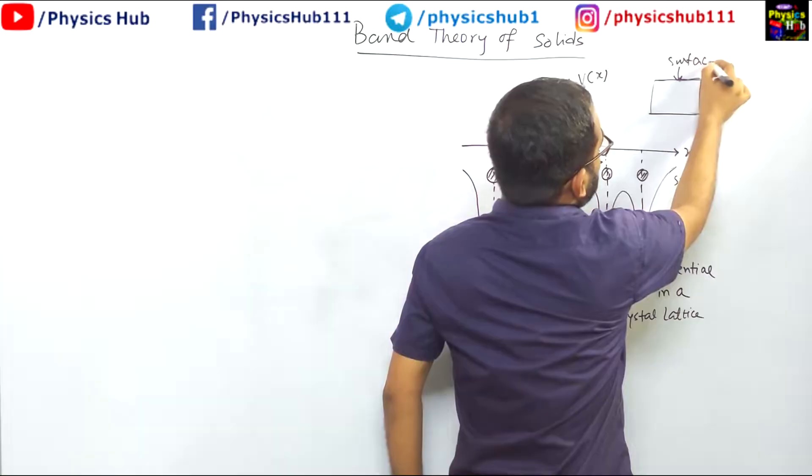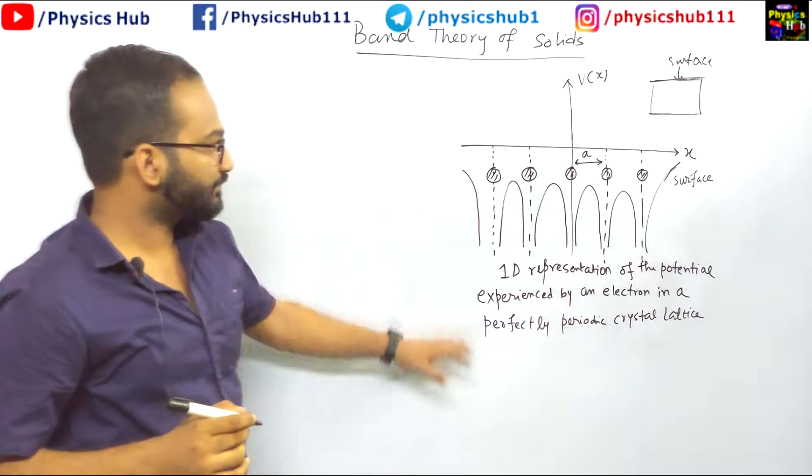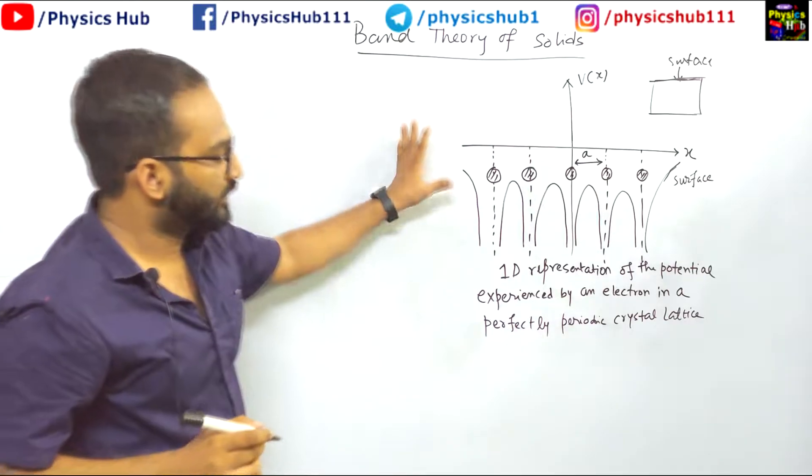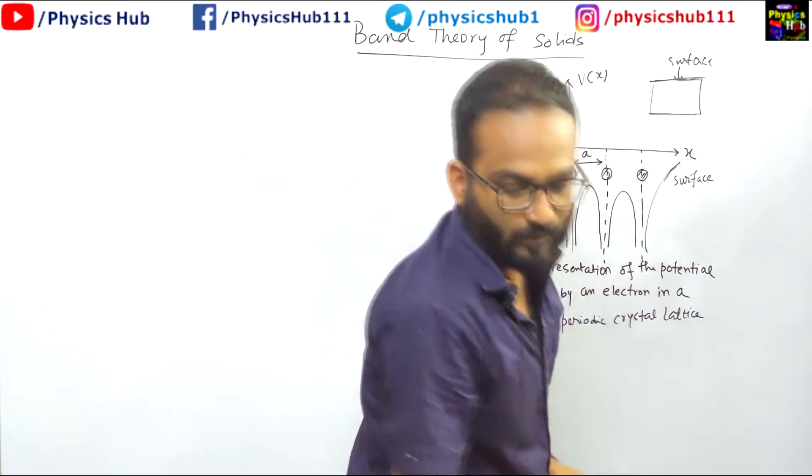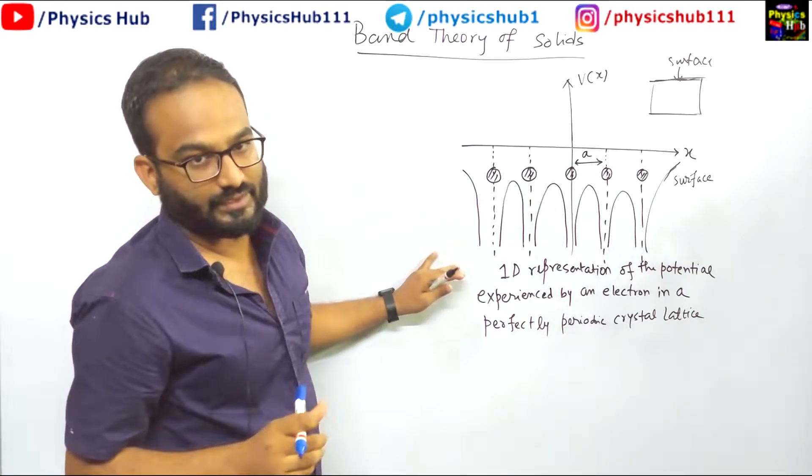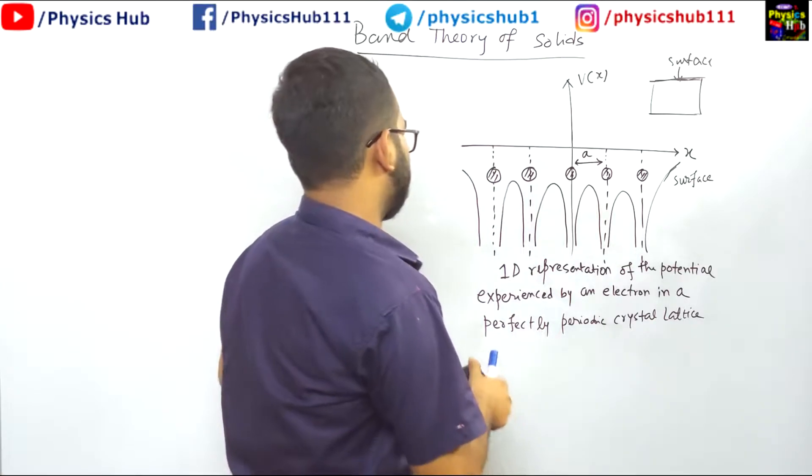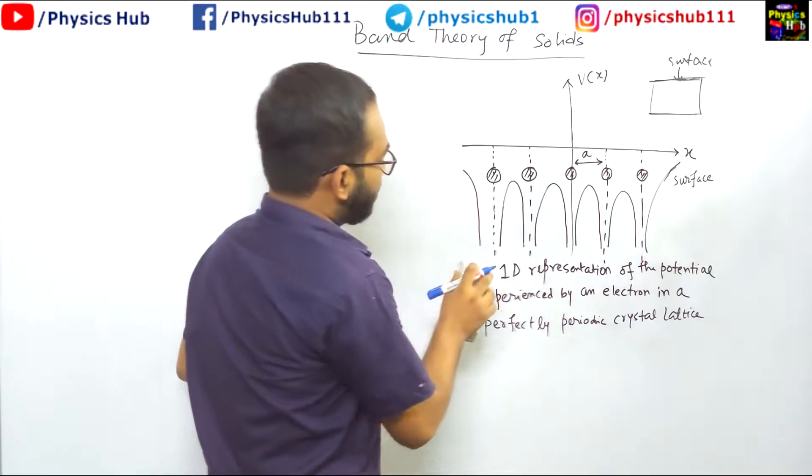So this portion shows this area surface. Now, still this form of the potential is still very complicated. So what we can do? We can further approximate it.